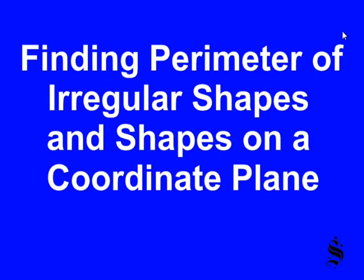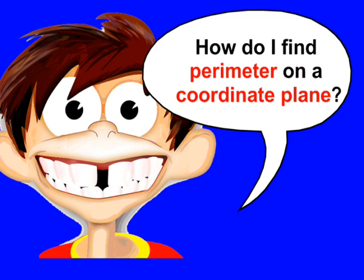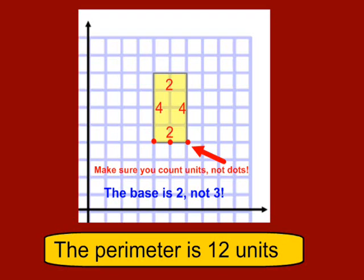Finding perimeter of irregular shapes and shapes on a coordinate plane. So how do I find perimeter of shapes on a coordinate plane? It's actually pretty easy.